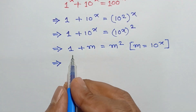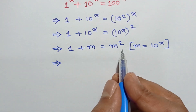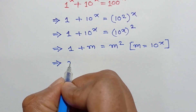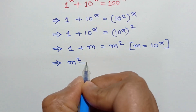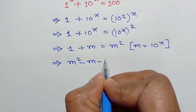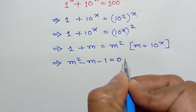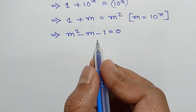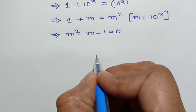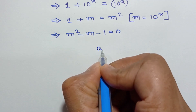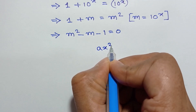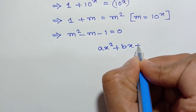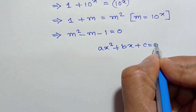If we take the left side to the right and write the right side to the left, we will have m squared minus m minus 1 is equal to 0.